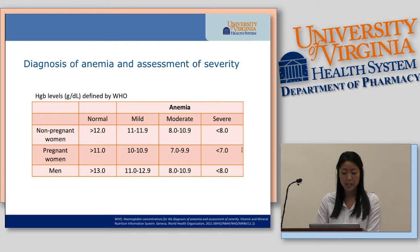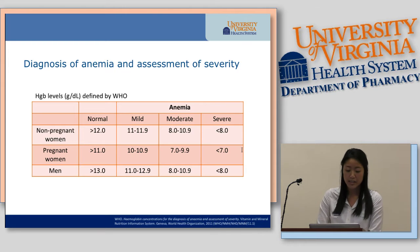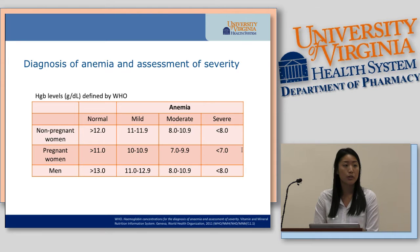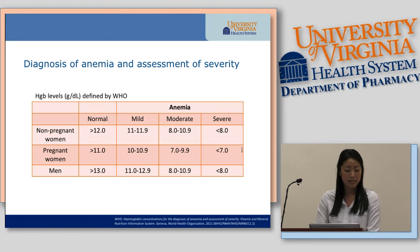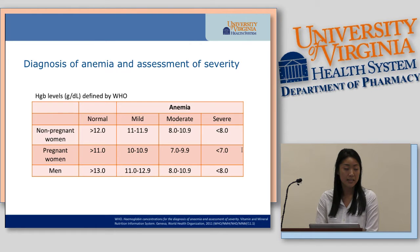Anemia is the reduction in hemoglobin concentration below the normal expected range — a condition where there's a reduced oxygen-carrying capacity of blood that doesn't meet the physiological needs of an individual. It's really when hemoglobin drops below normal values: for non-pregnant women, that would be 12; for pregnant women, 11; and for men, 13. They can be further classified based on severity.